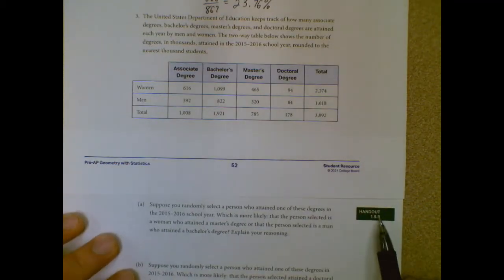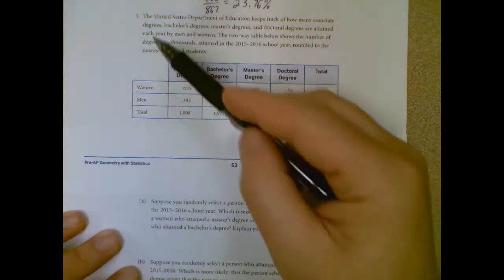Hello, everybody. This is Mr. Bowen. So we're looking at the 1.9 handout here, looking at question three.